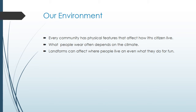Every community has physical features that affect how its citizens live. So what does that mean? Like if a climate is different we are going to wear different clothes. If landforms as well can affect how we are going to live, how we are going to build houses, or affect the way how we are going to build roads and so on.